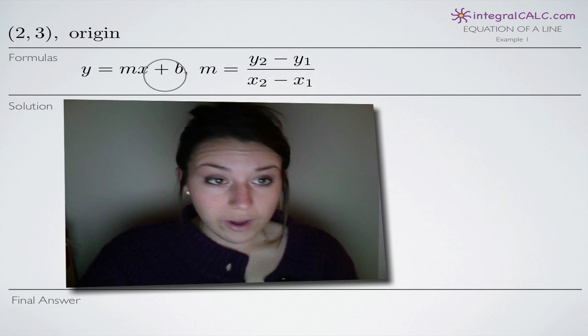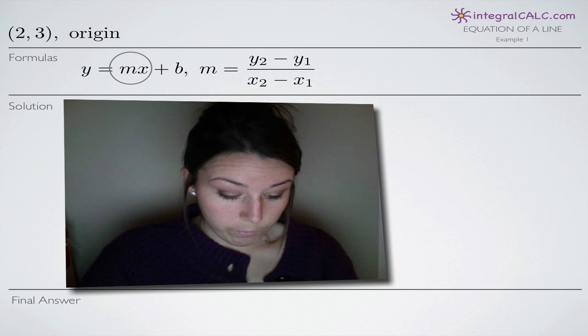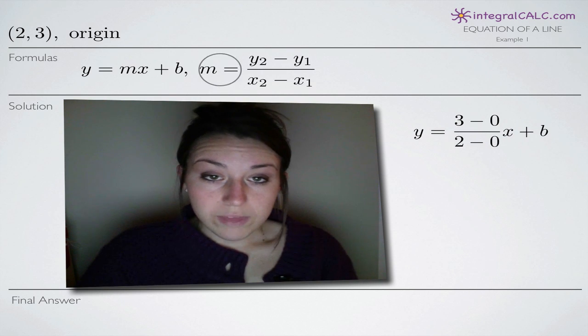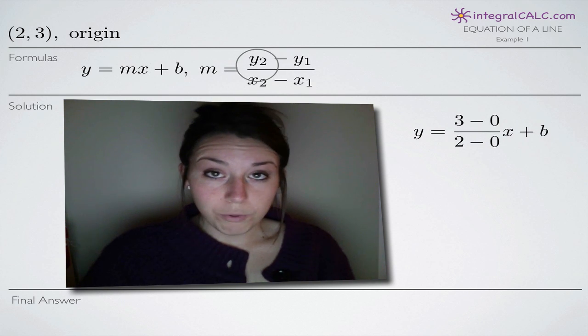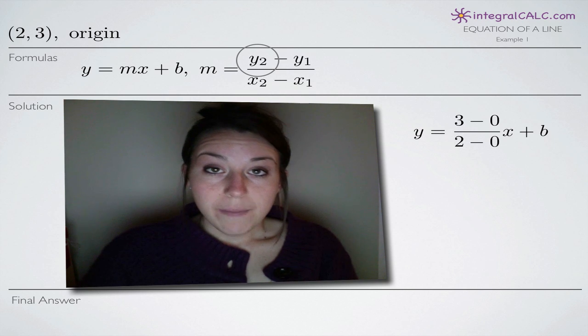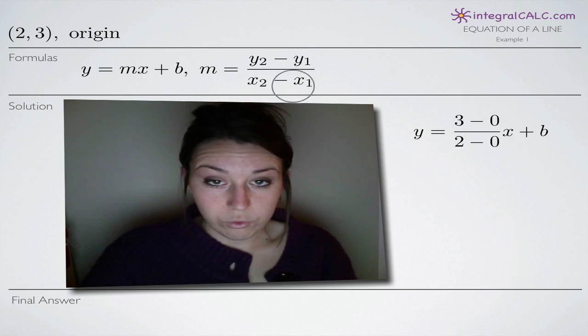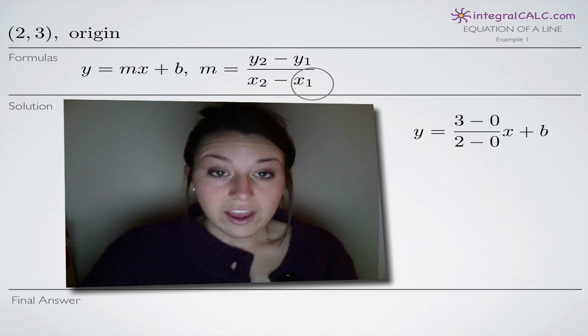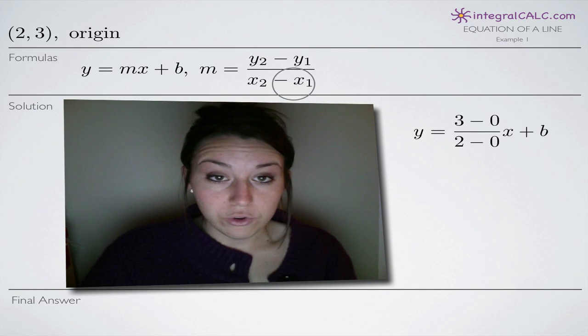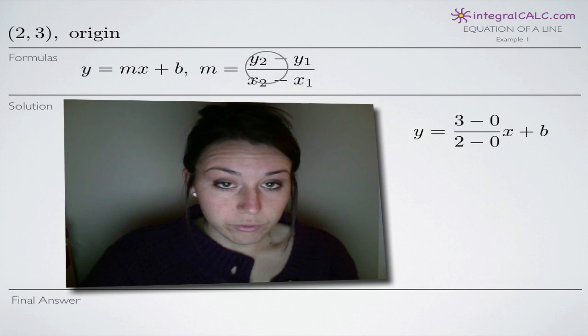The first thing we'll do is find m, the slope. The way that we do that, remember we have two points and one of them is the point x sub 1, y sub 1, these two points here. And the other is the point x sub 2, y sub 2, these two numbers right here.